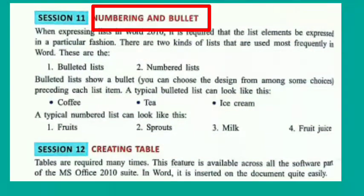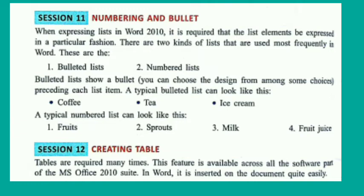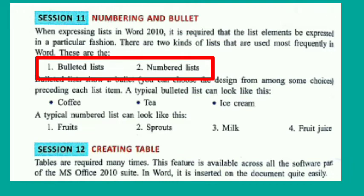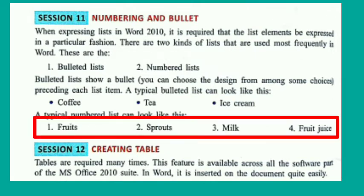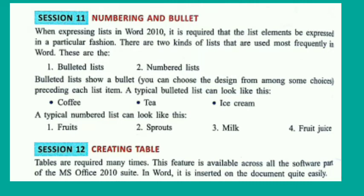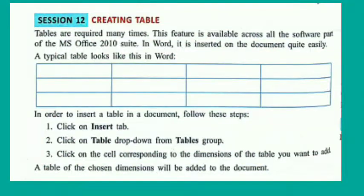Next, numbering and bullets. When expressing a list in MS Word, the list elements can be expressed in a particular fashion. There are two kinds of lists used most frequently: bulleted lists and numbered lists. A bulleted list shows a bullet preceding each list item — you can change it to any design. A numbered list shows items as 1, 2, 3 — you can also change it to Roman numerals (I, II, III) and many other formats.